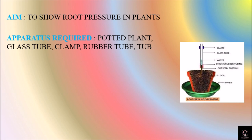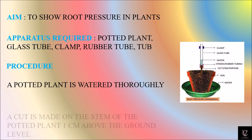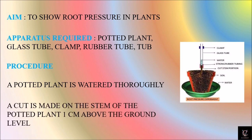What procedure are we going to follow? A potted plant is watered thoroughly. As shown in the figure, the apparatus is set up like this and a cut is made on the stem of the potted plant one centimeter above the ground level. We can see here the cut position on the stem.